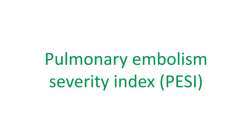The original PESI score was more complex, with 10 points each for male sex, chronic heart failure, and pulmonary disease, which is added on to the age of the person. Cancer would add another 30 points, and so would systolic blood pressure of less than 100 mmHg and pulse rate of 110 per minute or more. Respiratory rate more than 30 per minute and temperature of less than 36 degrees centigrade would add 20 points each.